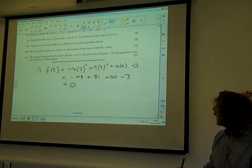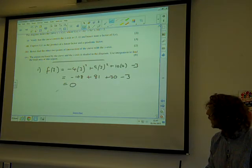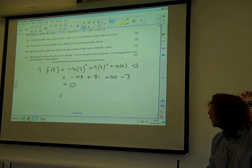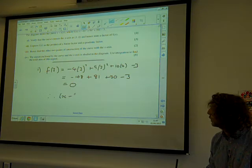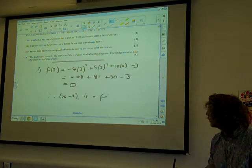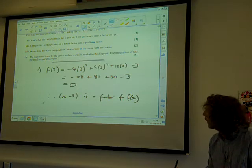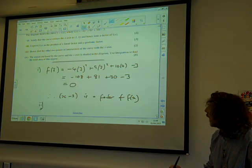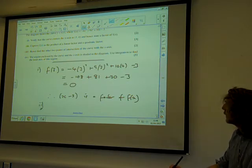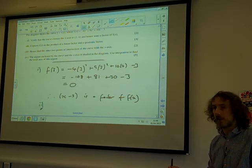So, a factor of f(x). Well, a factor of f(x) would be x - 3. Brilliant. A couple of marks. Nice mark to start us on. Part 2: Express f(x) as the product of a linear factor and a quadratic factor.